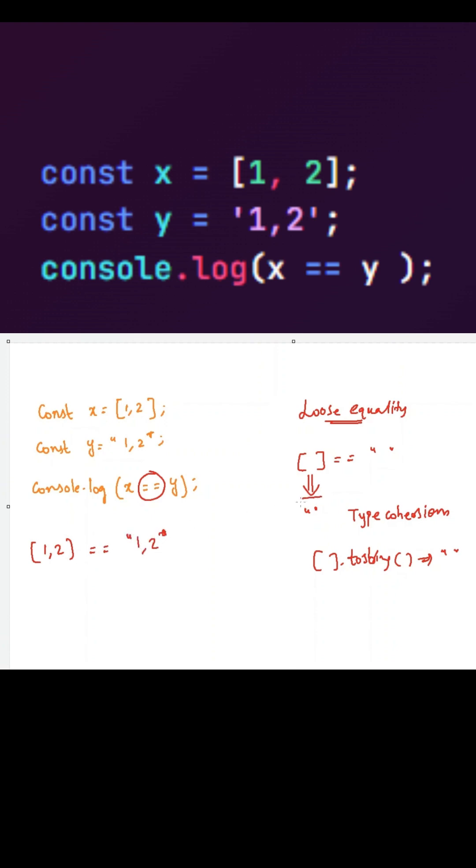As we see here, this is converted into a string. So this will be internally converted into string 1 comma 2 by using type coercion concept. Our expression will become string 1 comma 2 double equal to string 1 comma 2.